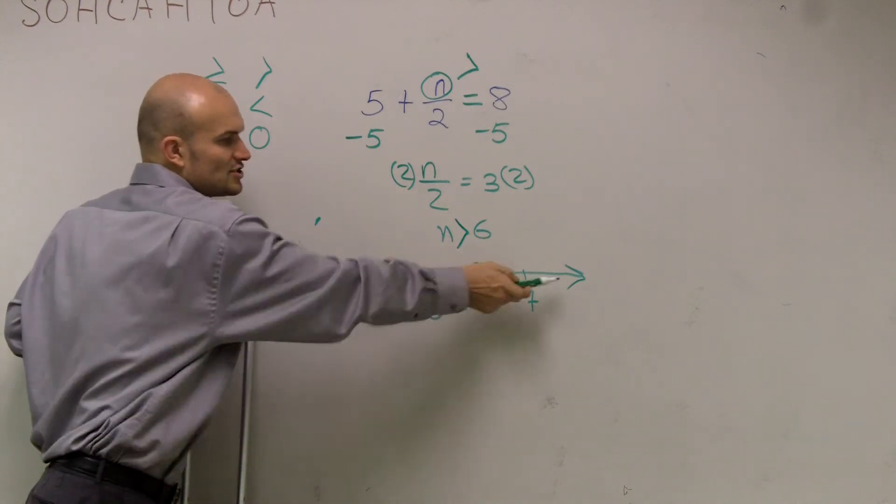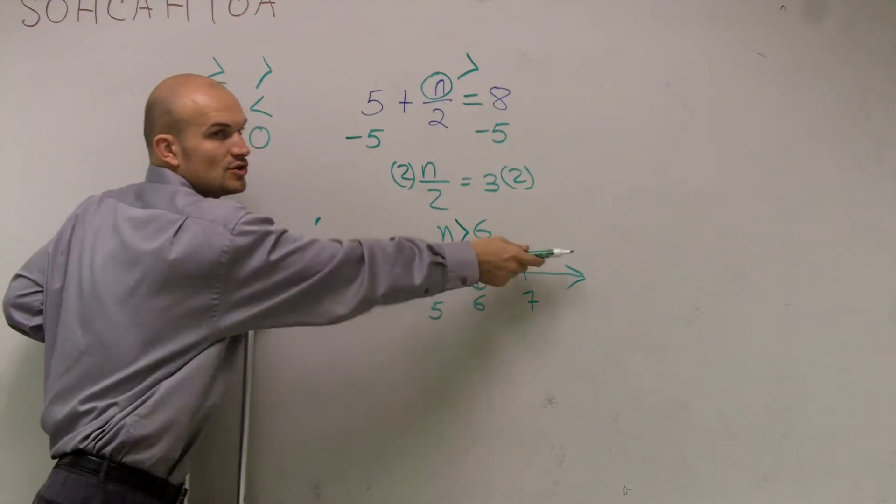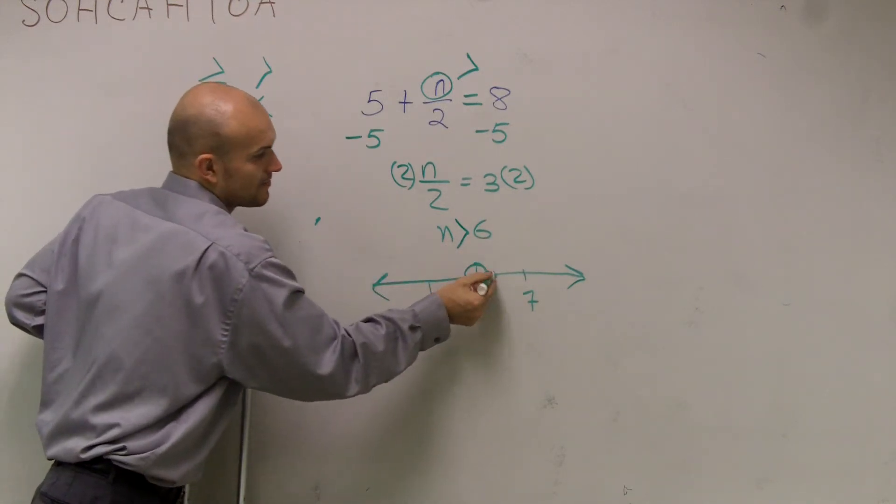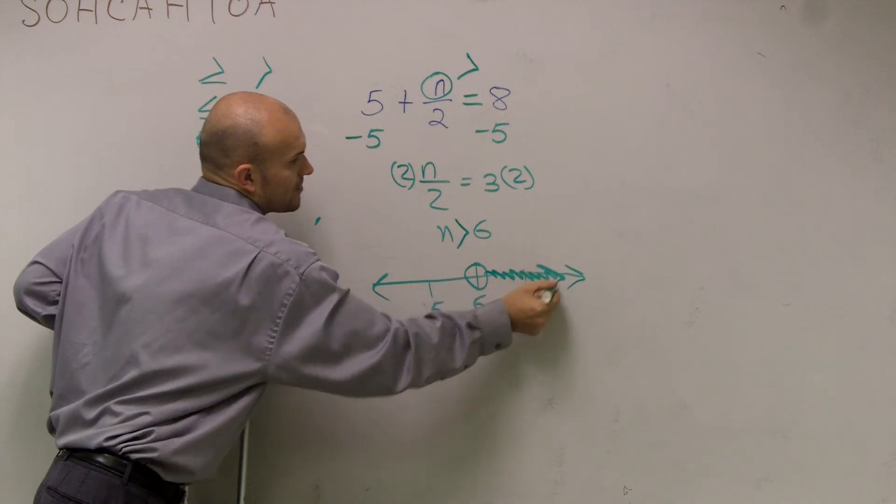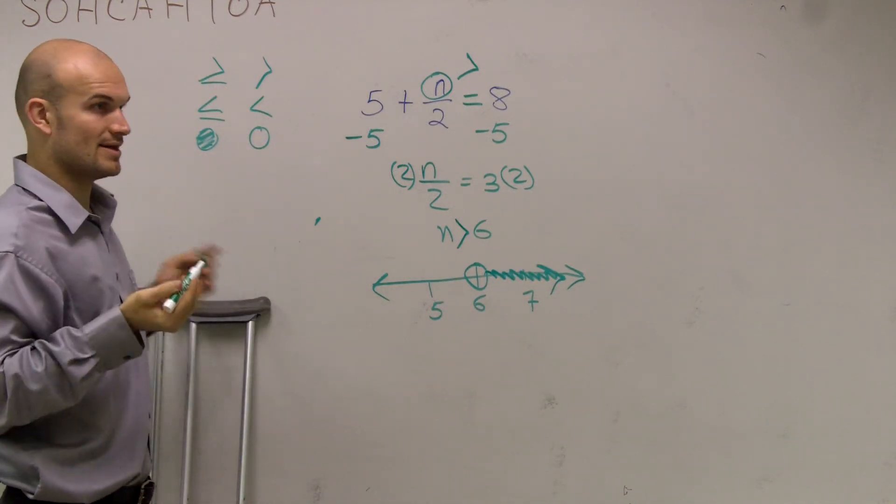So if I go in this direction or this direction, which one's going to provide the numbers that are greater than 6? We say all the numbers going to the right are greater than 6, so your arrow goes to the right. And that's it.